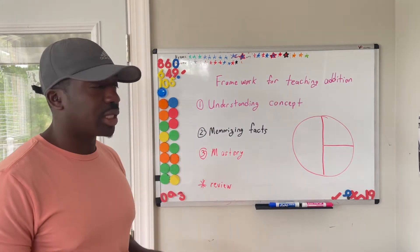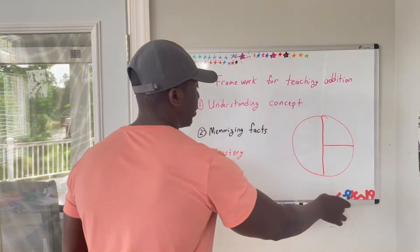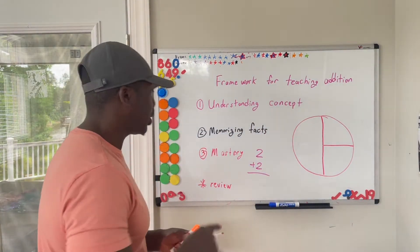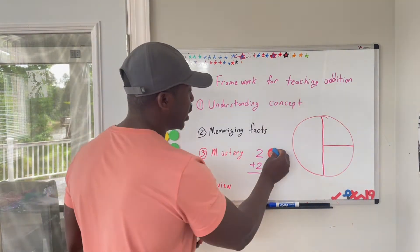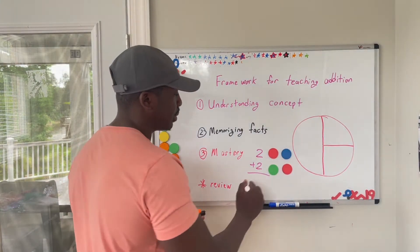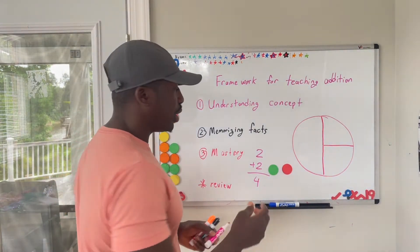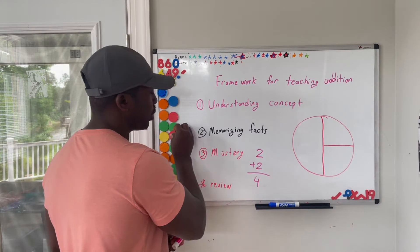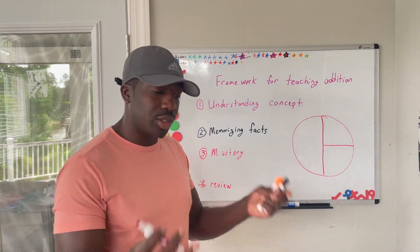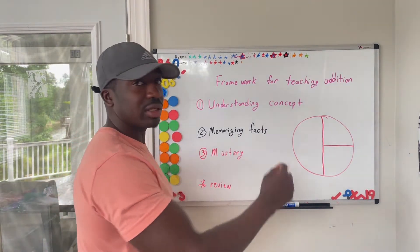Going back to understanding the concept, this part of the whole equation to me is the easiest part to teach. For example, with a problem like two plus two, the conceptual part is understanding — and you guys have probably seen this in previous videos — that this means two objects plus another two objects equals four objects. So if your child is starting the process of either addition or subtraction and they don't have the concept down, that's where I would start. Understanding that addition is bringing two things together.